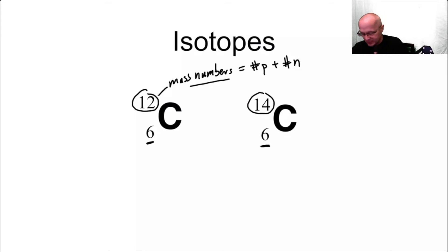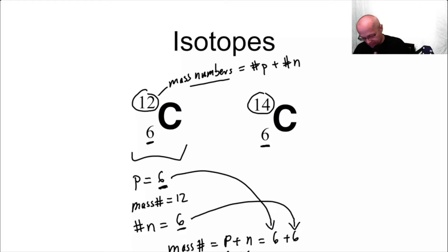Now for this particular one here, we have six protons and a mass number of 12. So the number of neutrons has to be six because remember a mass number is protons plus neutrons. So it's going to be six from here plus six from here. Equals 12. And that's the number that's up here. Six plus six equals 12.